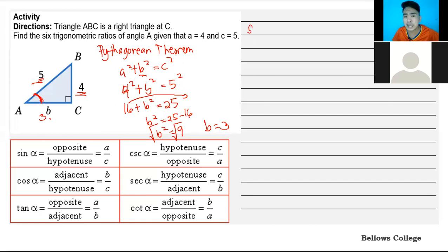First is sine A. The formula is opposite over hypotenuse. How do we know which is opposite? Since we're focusing on angle A, the opposite is 4. First we need to identify who is opposite, who is adjacent, and who is hypotenuse. Then when we get the ratio, it will be easy.